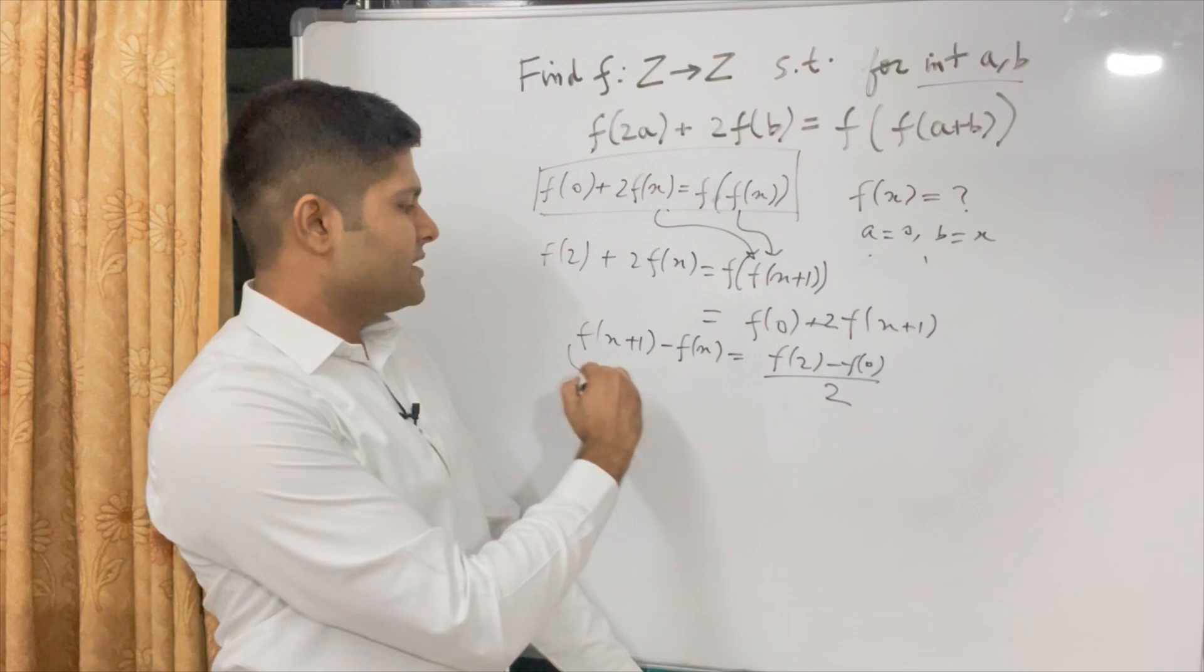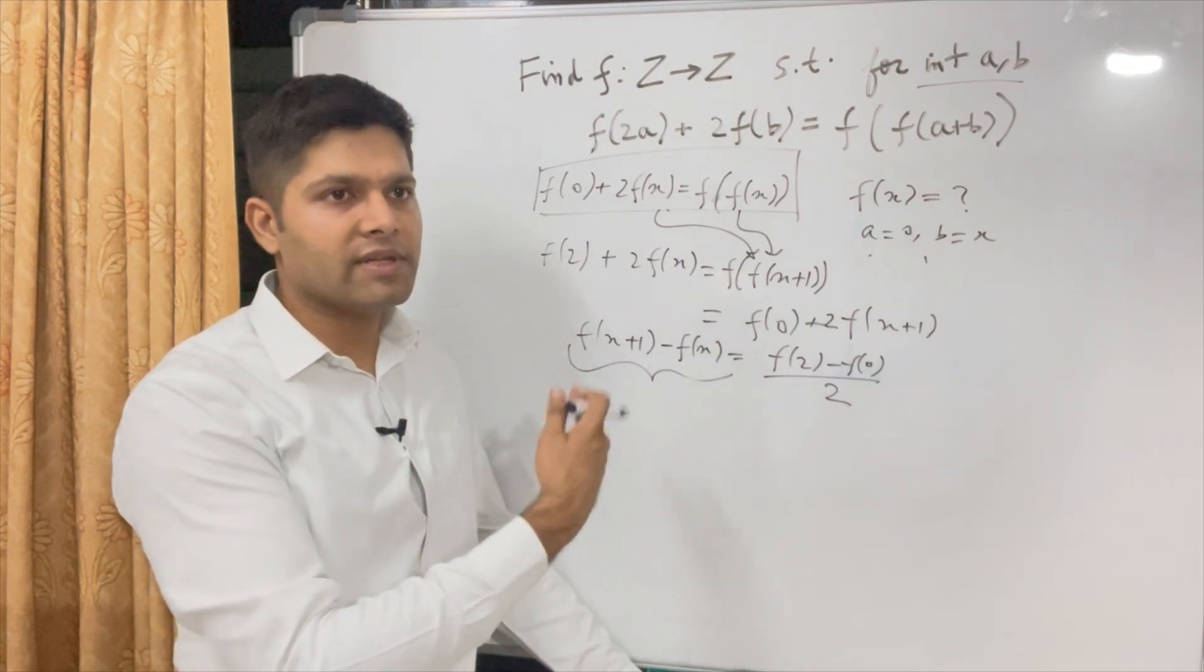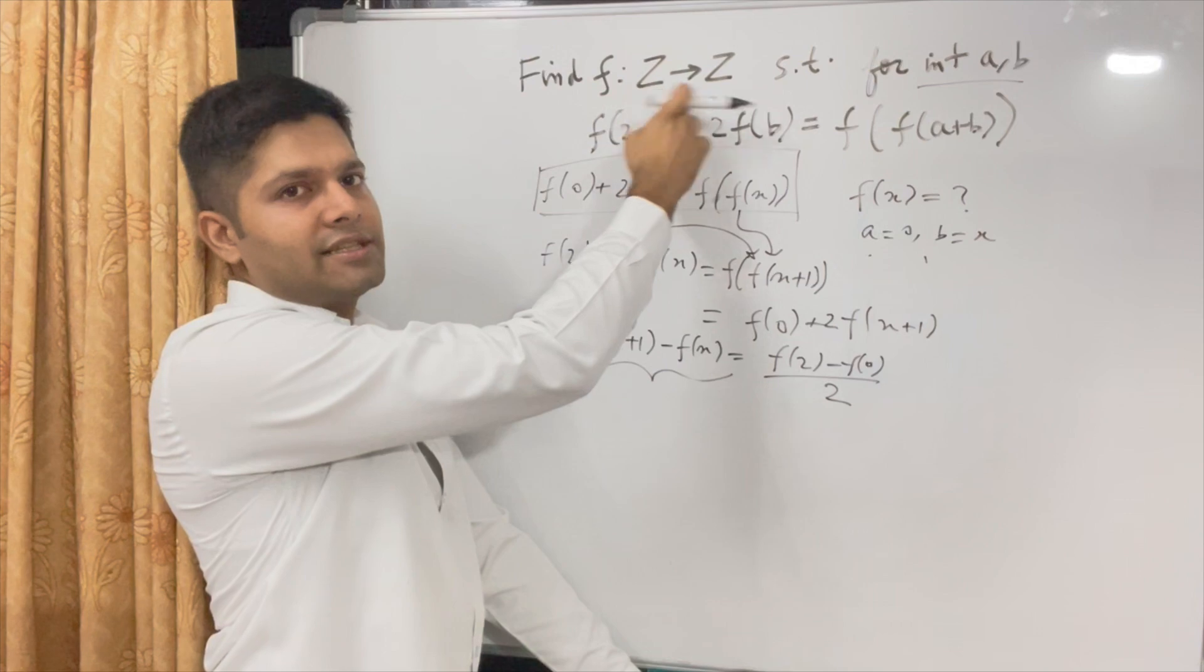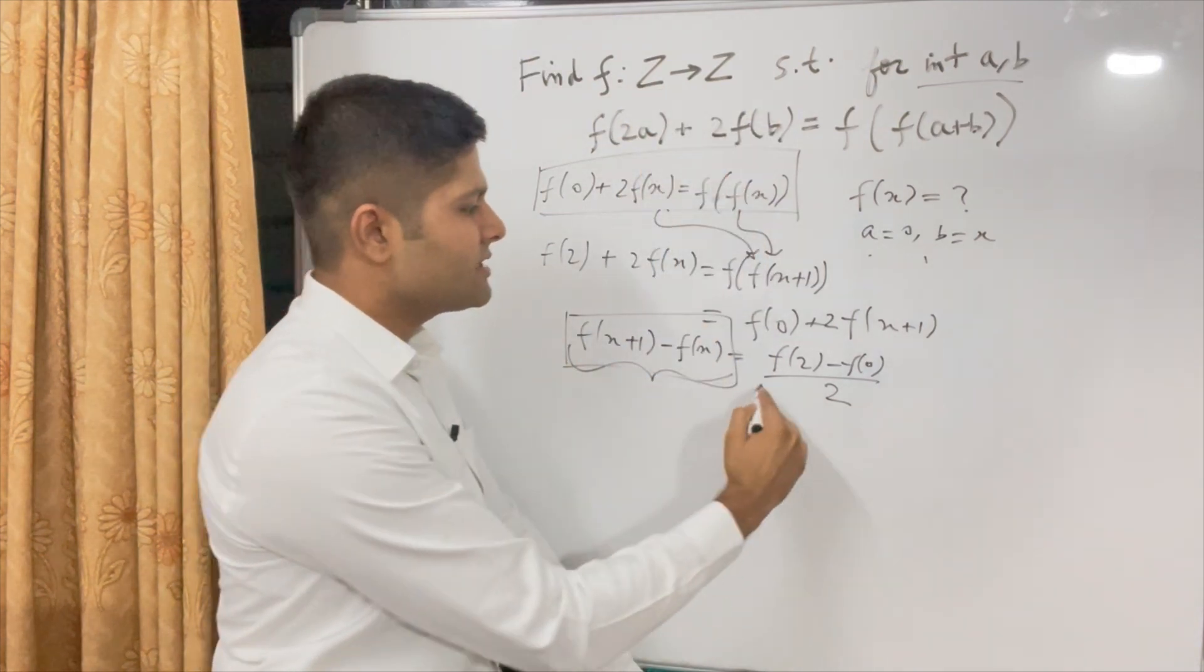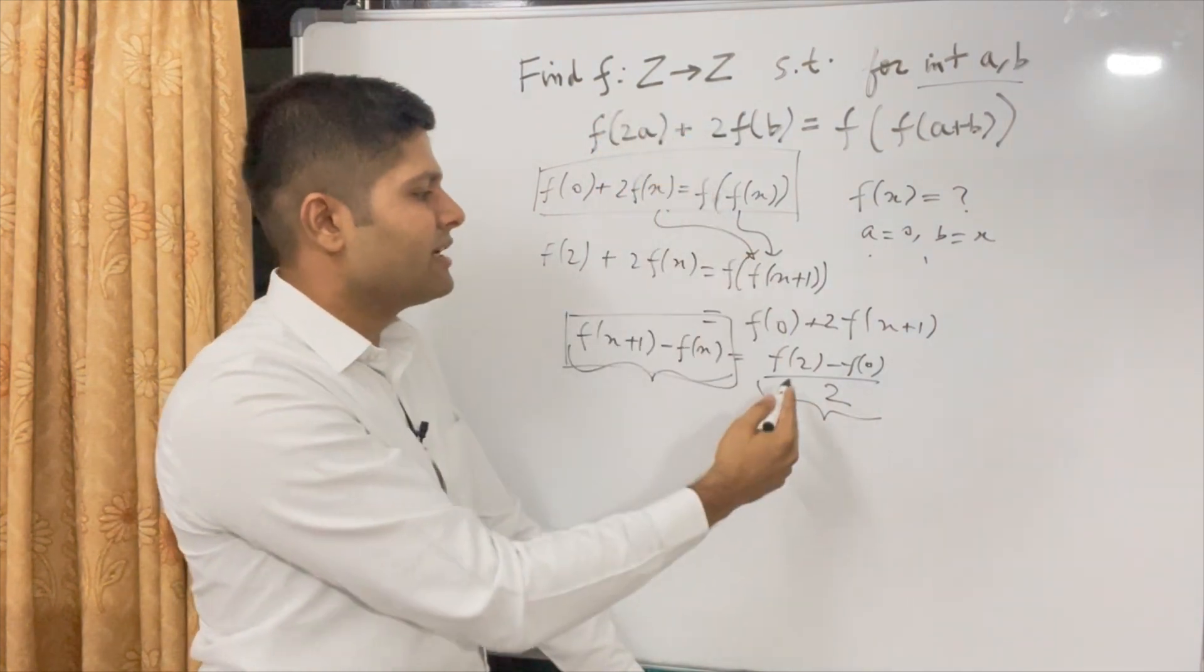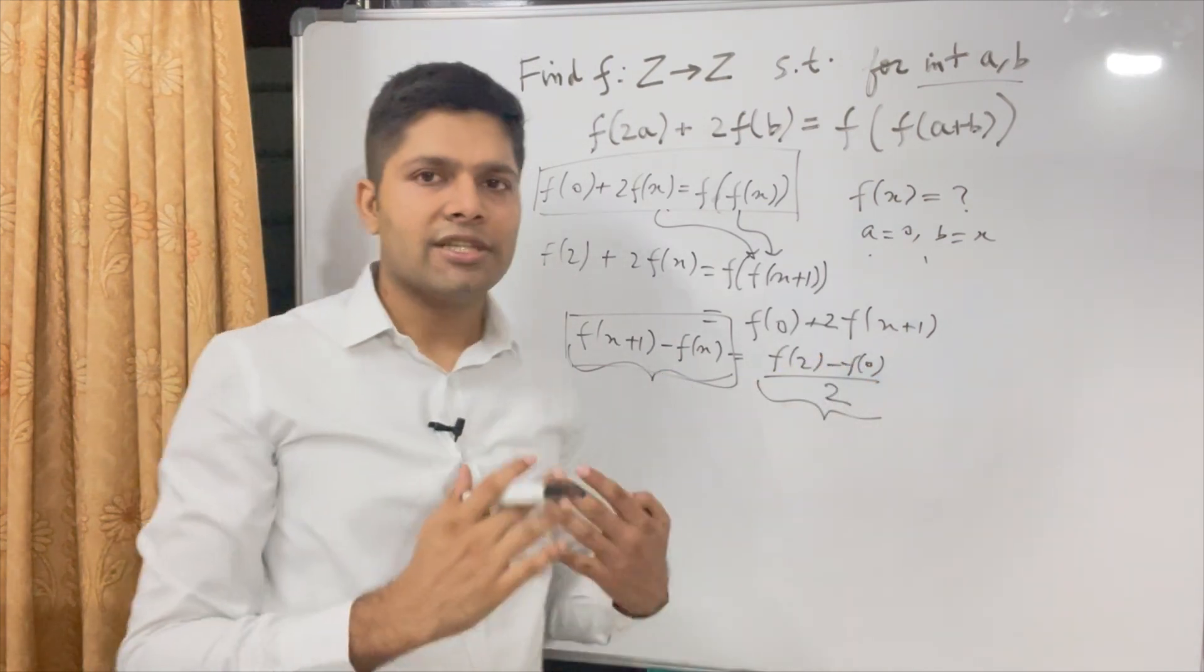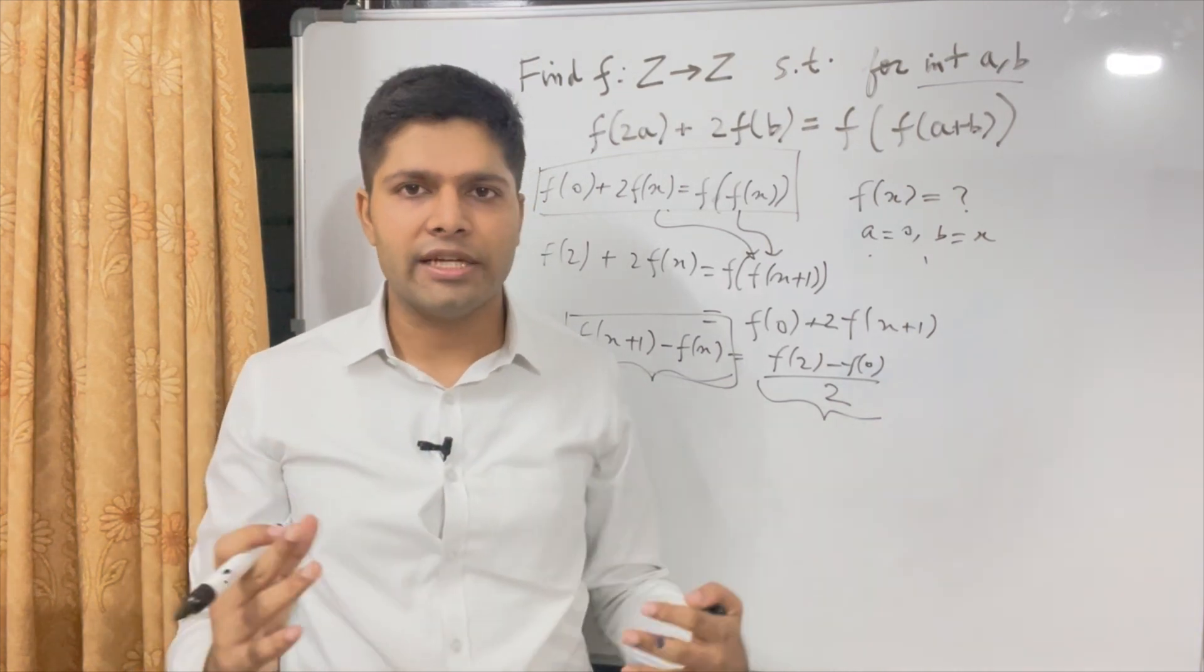So what is this? This is a difference of consecutive values. x+1 is the next value of this function because this function is for integers. This is a function from integers to integers, Z to Z. So this is a difference of consecutive values. And what is this? f(2) - f(0)/2. So since this is a function from Z to Z, f(2) will be a constant value, f(0) will be a constant value. So this difference is itself a constant value.